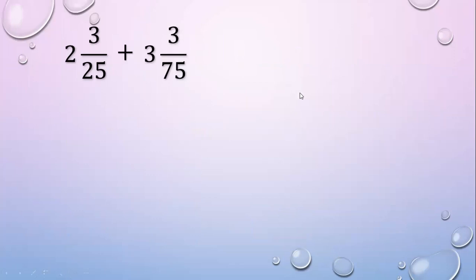So let's have an example. 2 and 3 over 25 plus 3 and 3 over 75. These are dissimilar fractions because the denominators are different. So first, we are going to get the LCD.